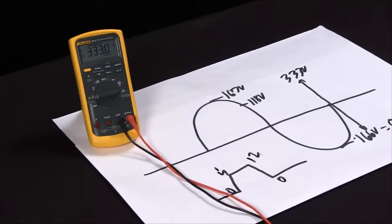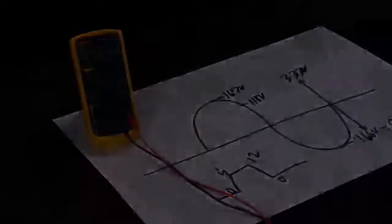So that's how we can use the relative mode on the Fluke 87 to troubleshoot a number of different situations that we're working on.